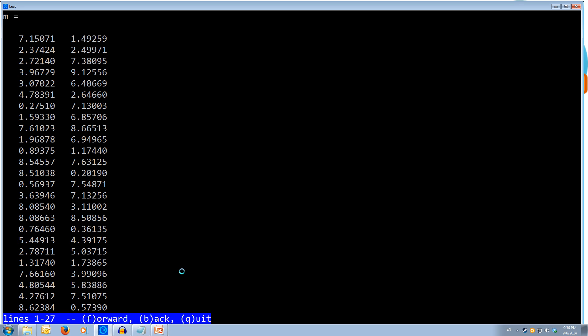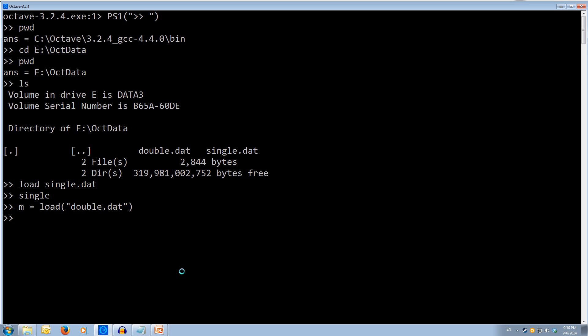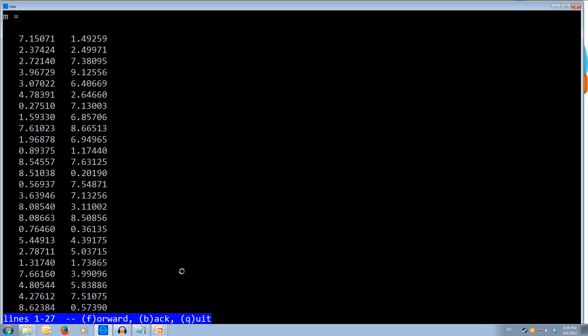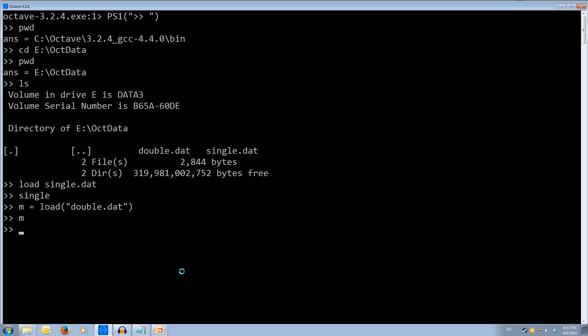And now it will automatically print out what our m value is now. So as you can see, I've got a matrix which is 2 by 20, probably 50 different lines. Ok, so we've loaded our data into this m variable now. So whenever I press m, it will print out all of my data that I loaded into m.